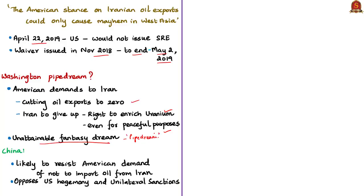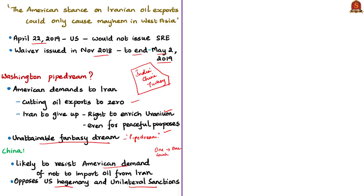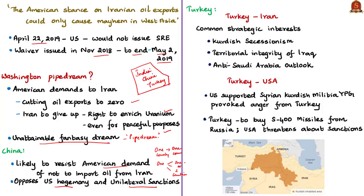The author provides possible responses from three countries dependent on Iran for oil: India, China, and Turkey. China, one of the largest importers of Iranian oil, is likely to resist the American demand as it opposes US hegemony and is firmly against unilateral sanctions — meaning sanctions imposed by one country on another country or countries.